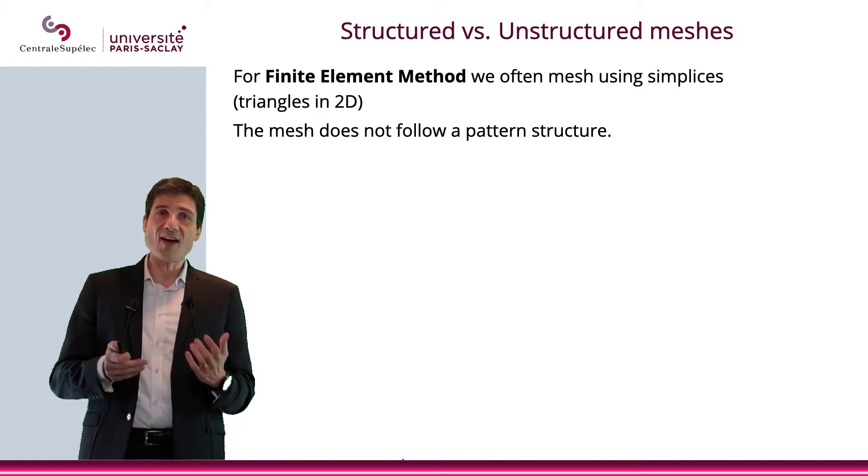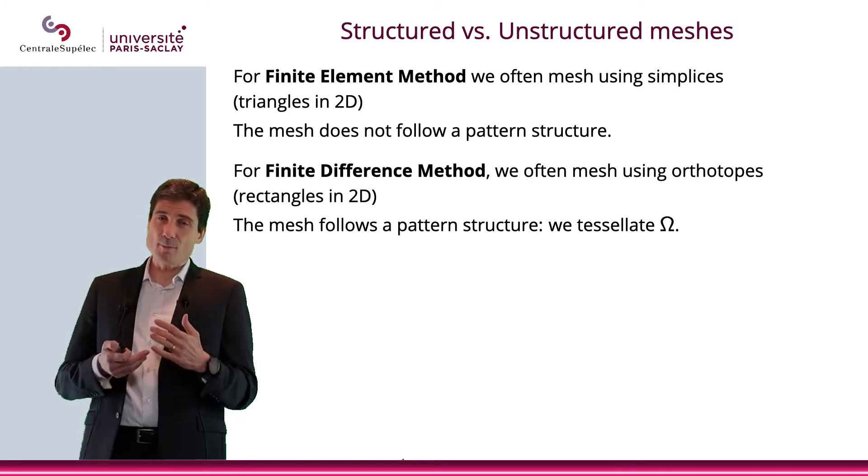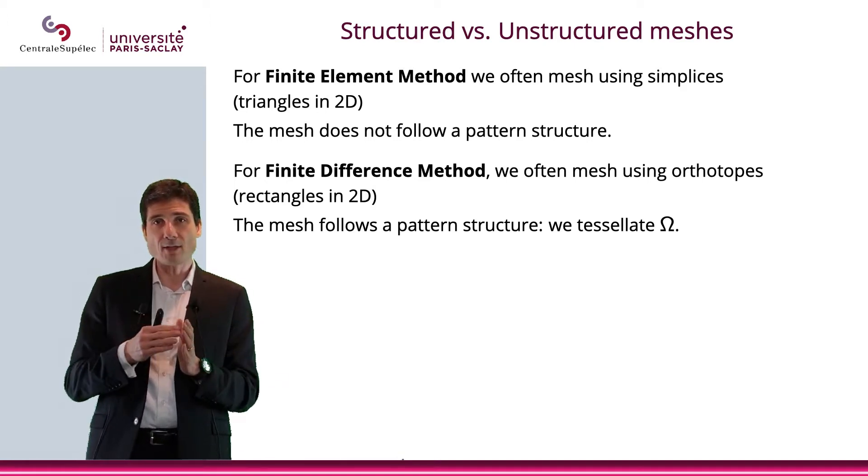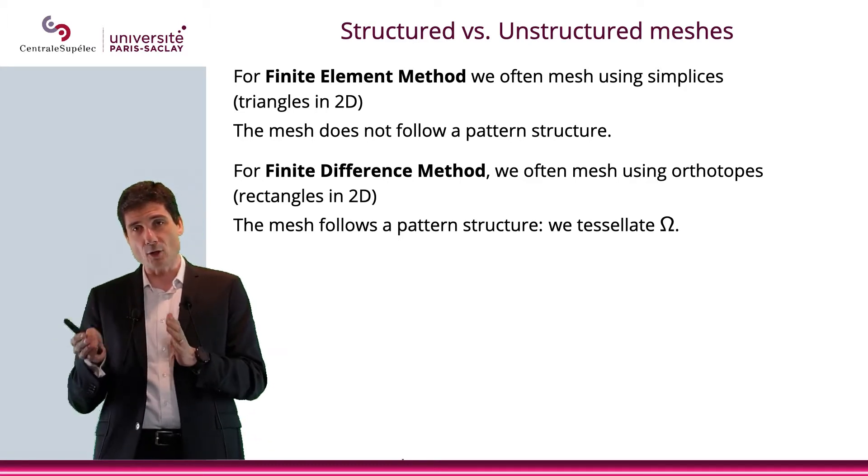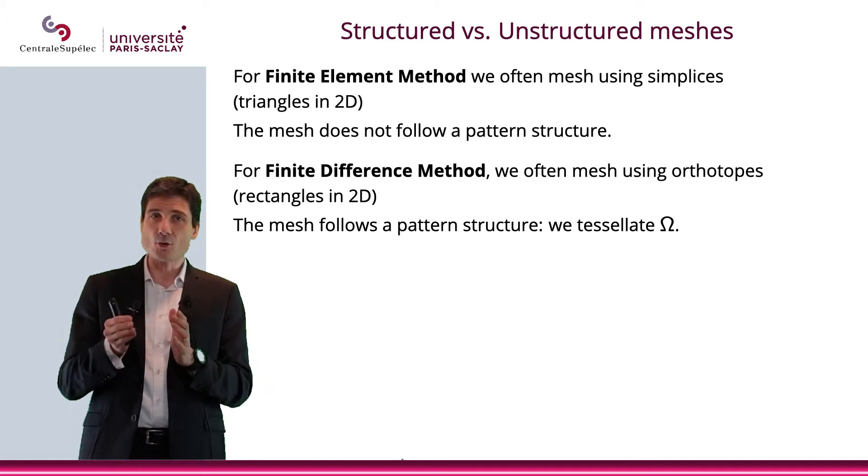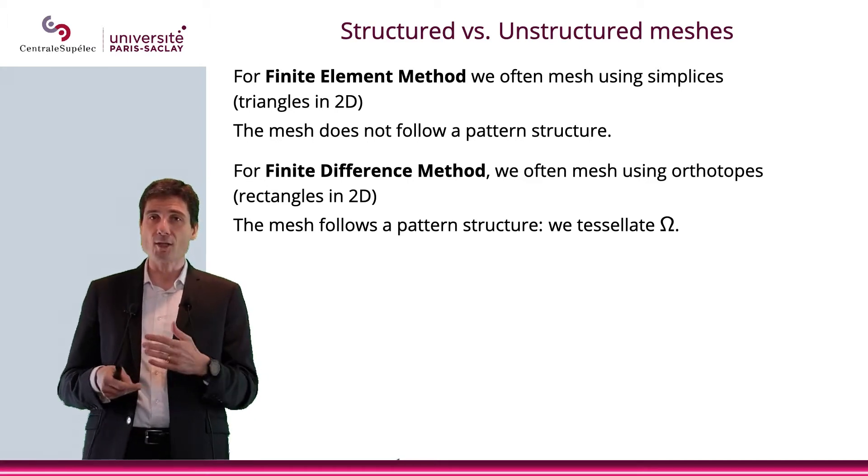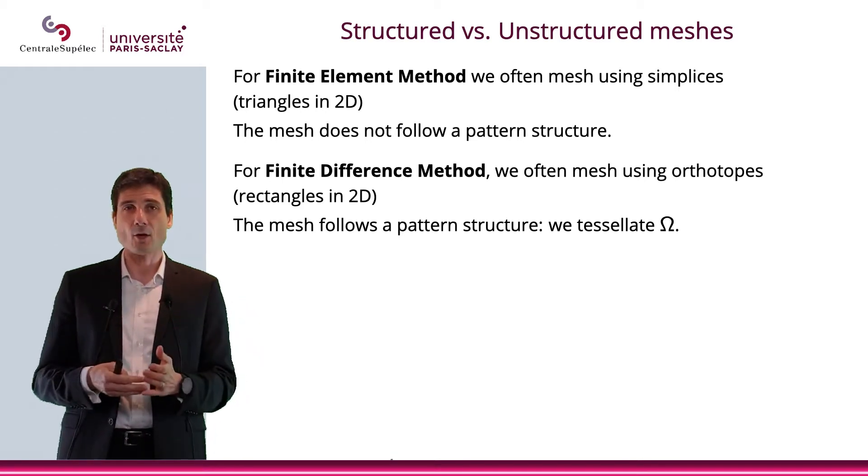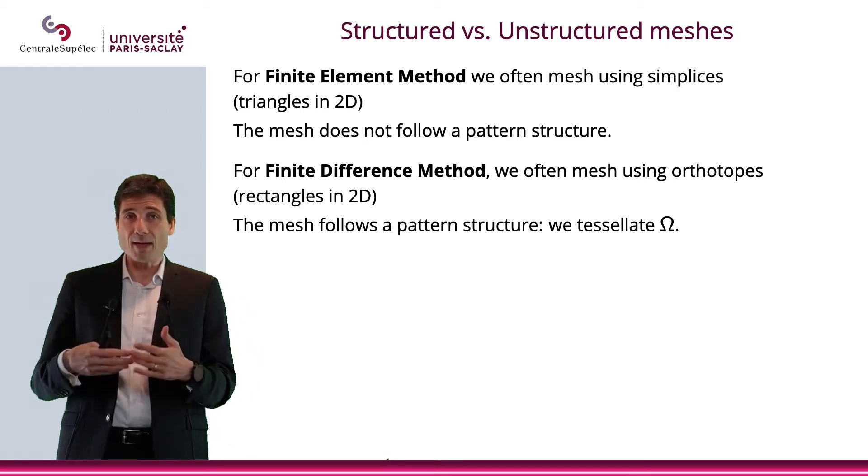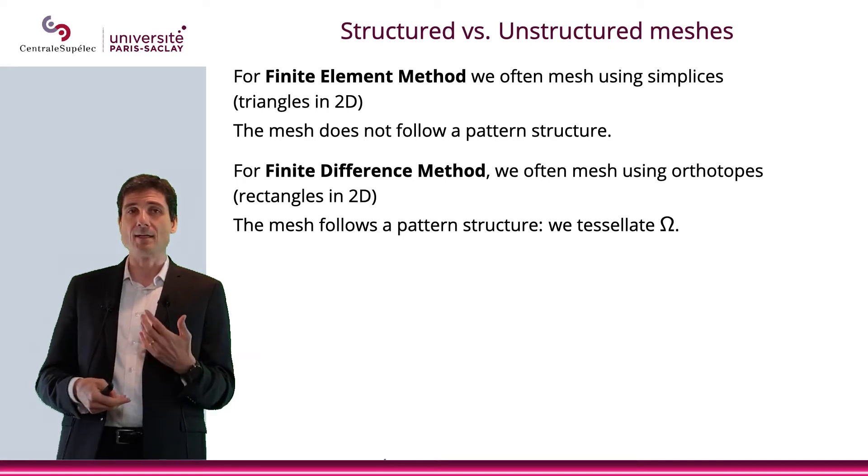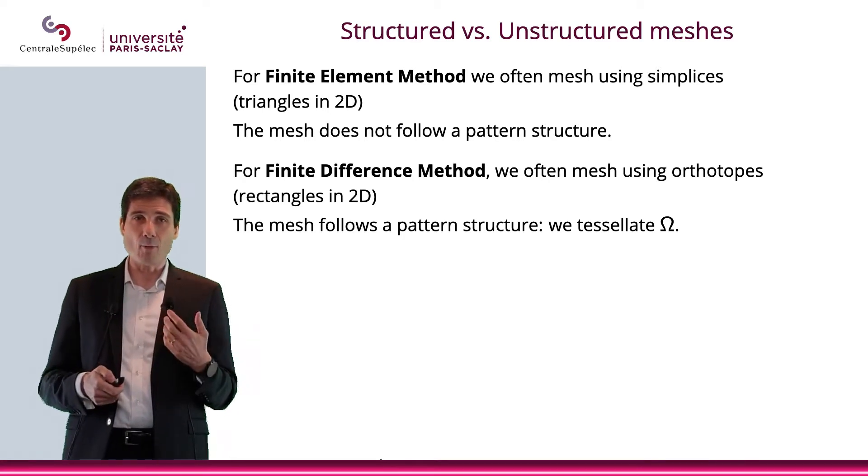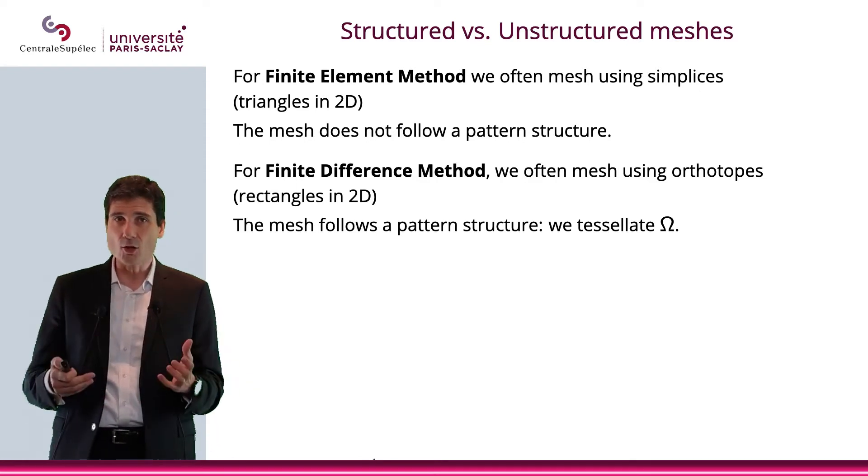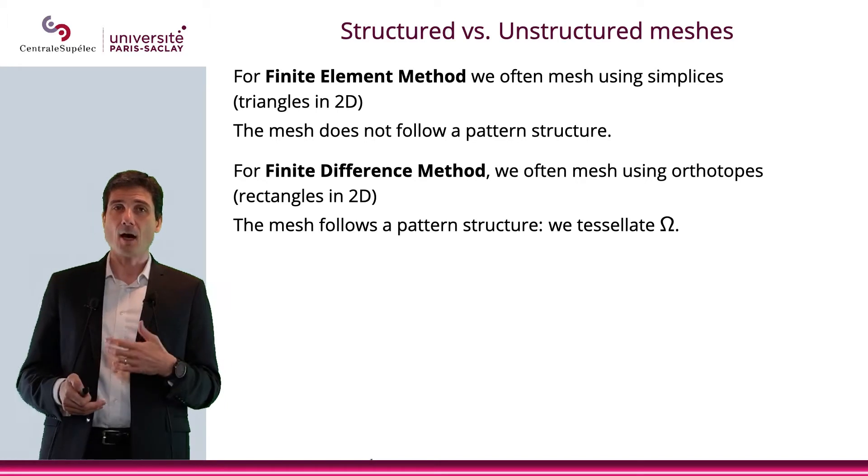Now, when we do finite difference method, we kind of like to be able to have a nice structure of the mesh. Because we're obviously going to have to go to the right or to the left. And so it's important to have a mesh that will allow us to do this easily. So often, we use orthotopes, basically rectangles in dimension 2. And what will happen is that the mesh will follow a pattern structure. What we're going to do is to tessellate our domain omega.